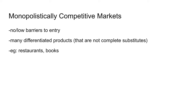The second type of market is monopolistically competitive markets. In this type of market there are basically low to no barriers to entry, and there are many differentiated products such as restaurants or book publishing. What makes monopolistic competition special is that each product is differentiated, so they're not complete substitutes for one another.